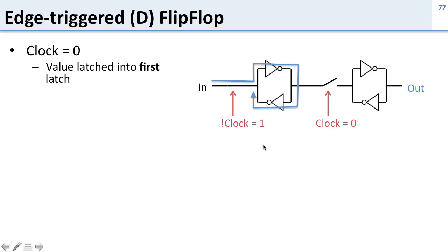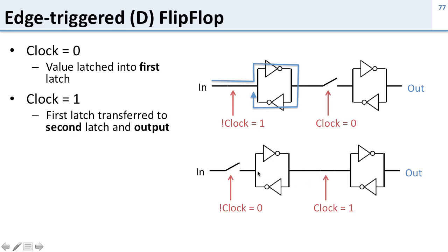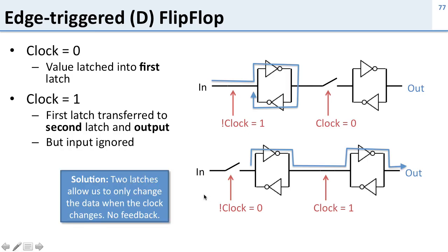Let's recap. With clock low, the first switch is closed and we can write into the first latch because not-clock equals one. When clock goes high, the switches flip: the first switch opens and the second switch closes. Now whatever value was in the first latch transfers to the second latch and becomes our output. Because the first switch is open, the input is ignored during this phase. This is how we solved the feedback problem of the transparent latch — by using two latches, we can only change the output when the clock transitions, which prevents feedback.